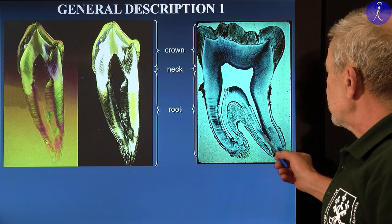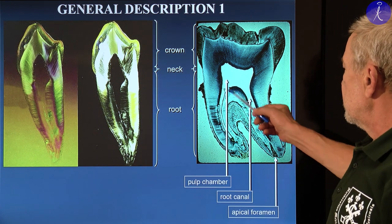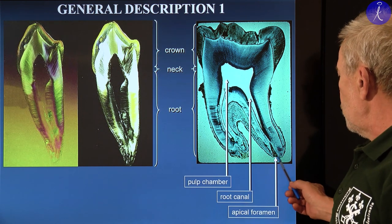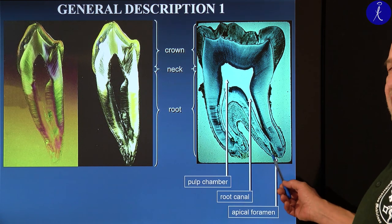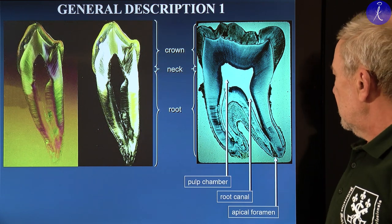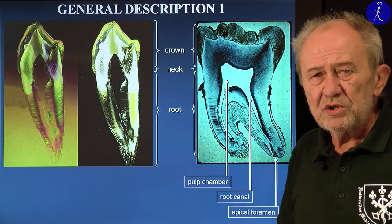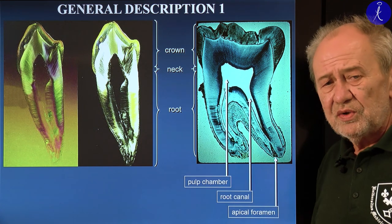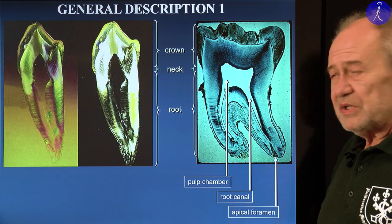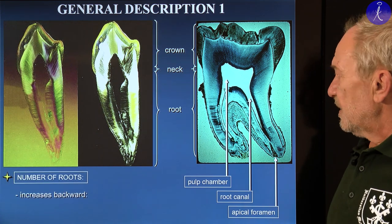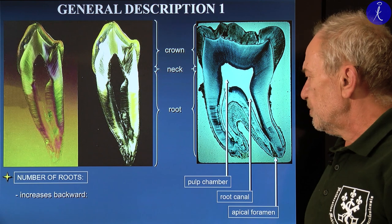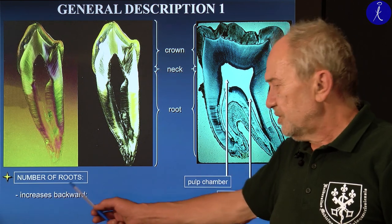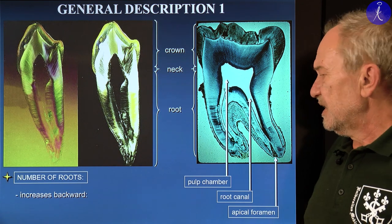The root has canals inside, and these lead into the pulp chamber cavity through an opening at the apex of the root called the apical foramen. This is where all the blood vessels and nerves can enter the pulp chamber. There are general rules related to the number of roots: posteriorly as you go, the number increases.